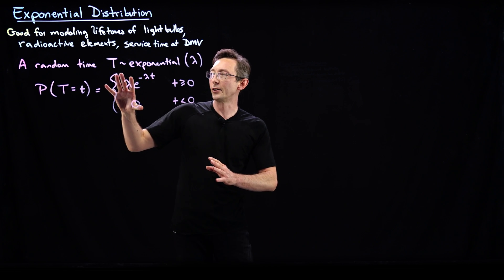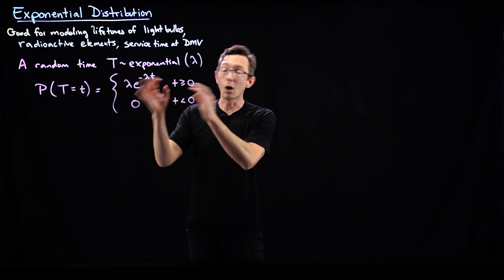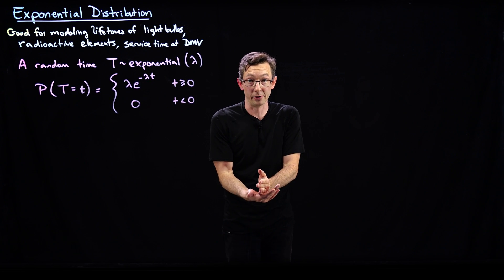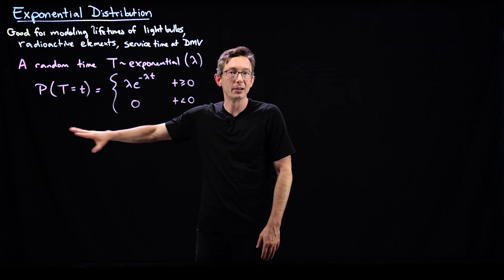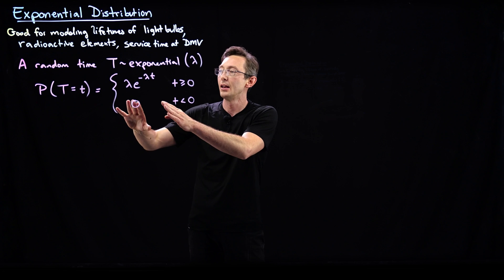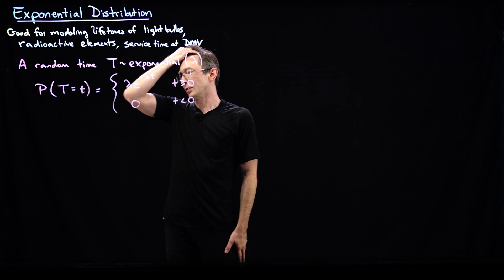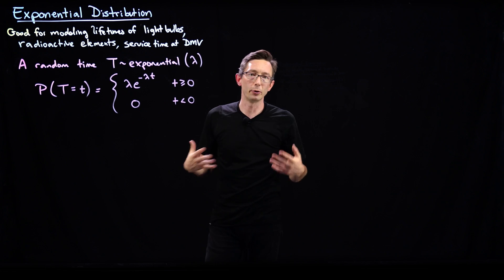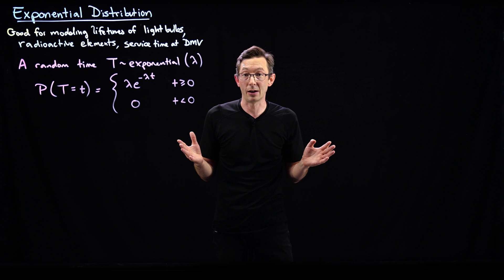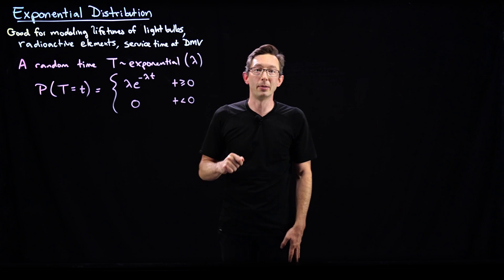Essentially, this probability density function for these times of events occurring is only defined for positive times. We assume that we start now at time zero, and the probability of something having happened in the past is zero — I've assumed it hasn't happened yet — and this is the probability of it happening in the future. A good light bulb should last for a really long time, thousands of hours, hopefully.